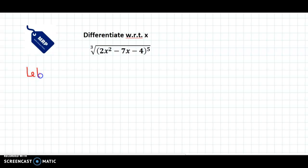Let y be equal to cube root of 2x squared minus 7x minus 4 raised to 5. Now, we can write this as 2x squared minus 7x minus 4 raised to the 5th power, and the cube root is raised to 5 by 3.